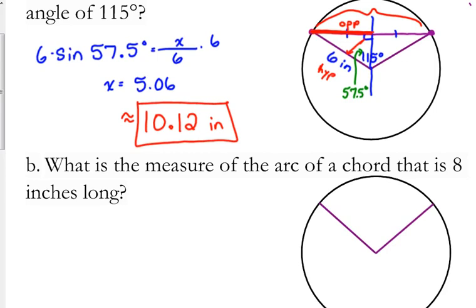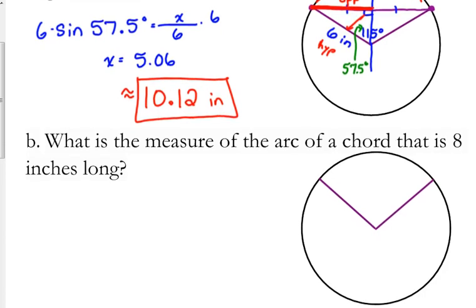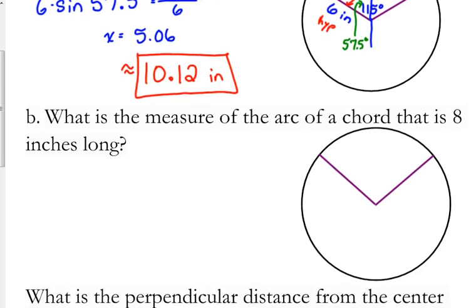Okay. So, we're resetting the problem. The only thing that we know at this point is that the radius is 6 inches. Part B asks us, what's the measure of the arc of a chord that is 8 inches long? So, similar setup, but this time we don't know the angle, but we know that the chord is 8 inches long. So, from this side to this side is 8 inches. If it's asking for the measure of the arc, we know from what we learned at the beginning of class that that's the same as the measure of the angle.